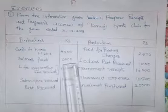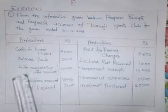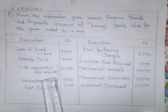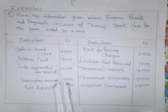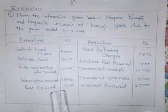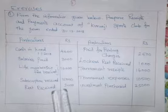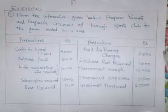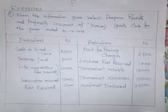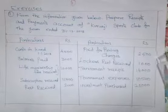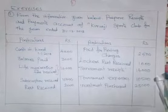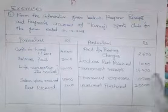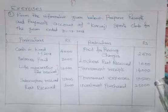Salary paid Rs. 3,000. Life Membership Fees received Rs. 10,000. Subscription received Rs. 15,000. Rent received Rs. 2,000. Paid for printing charges Rs. 2,500. Locker rent received Rs. 1,000. Tournament Receipts Rs. 14,000. Tournament Expenses Rs. 10,500. Investment Purchase Rs. 25,000.